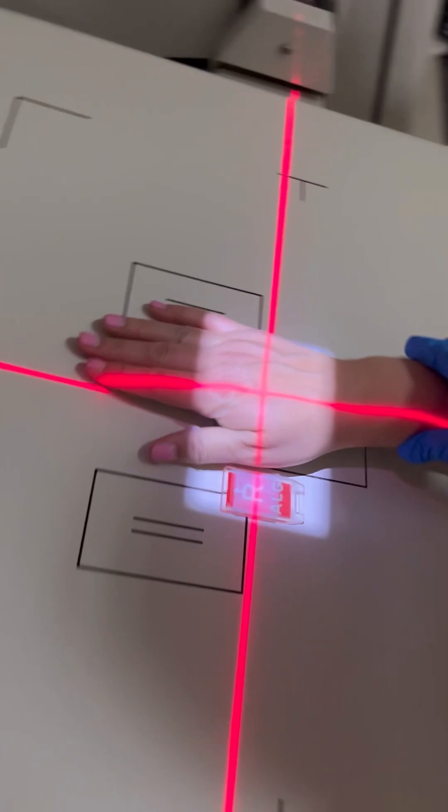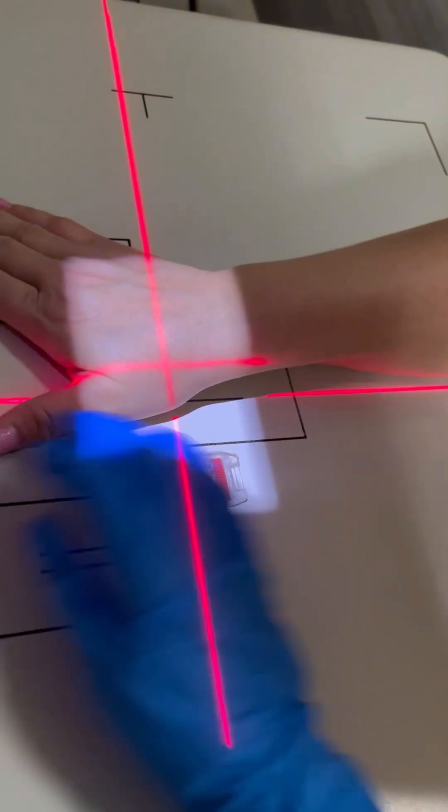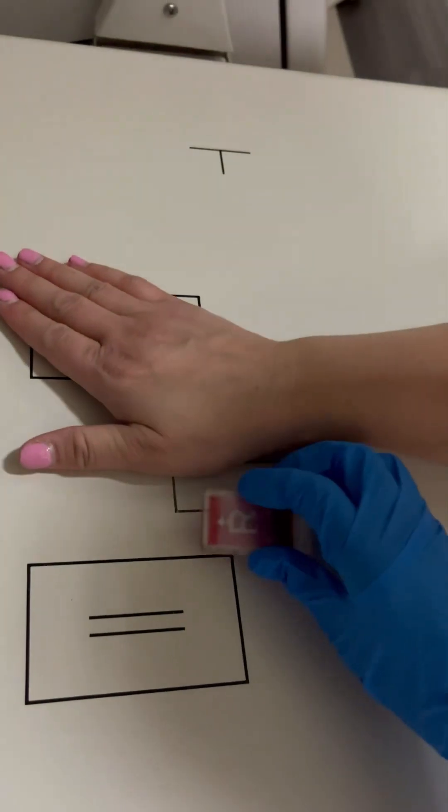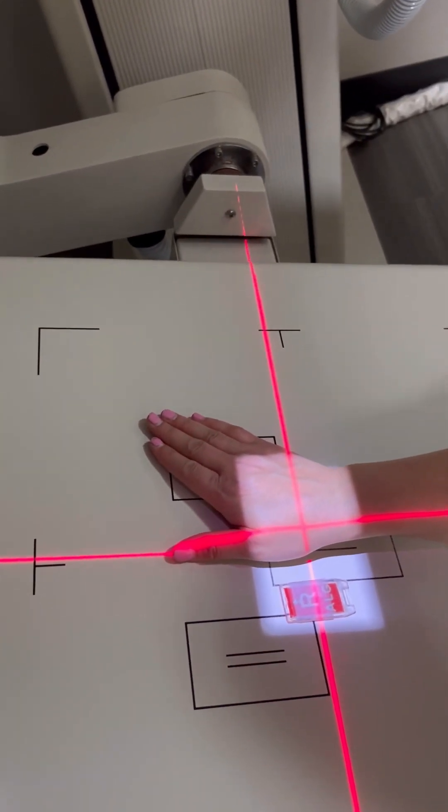We would do the same thing, which would be ulnar deviation, and center in that little snuff box area. That'll give you a nice open view of the scaphoid.